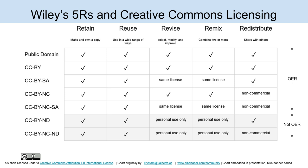The CC BY license isn't the only open license. There are variations depending on certain restrictions authors might want to put on the resource. There is SA — share alike — which tells a consumer that if they want to reuse or remix it, they need to use the same license when redistributing whatever they create out of the original resource. And NC means non-commercial, meaning others can freely redistribute a resource with this license, but it must not be sold for profit.